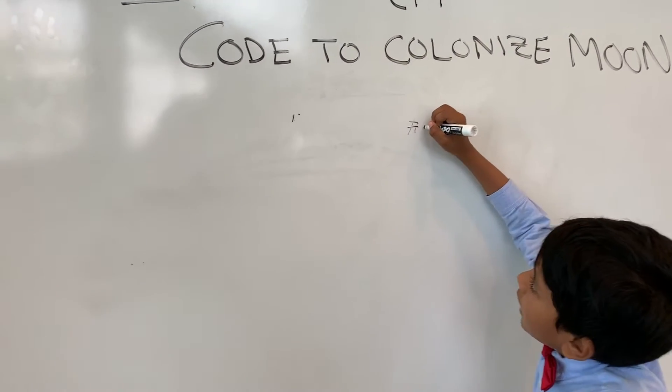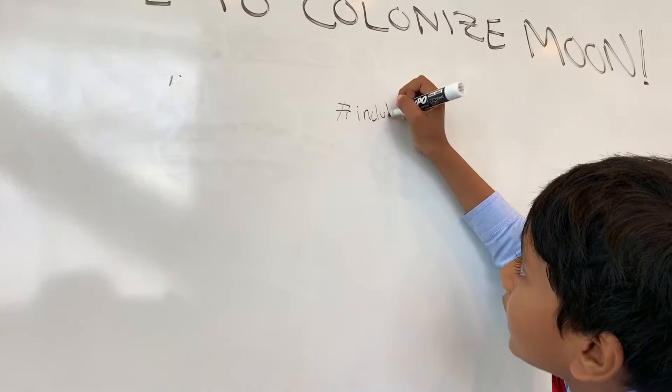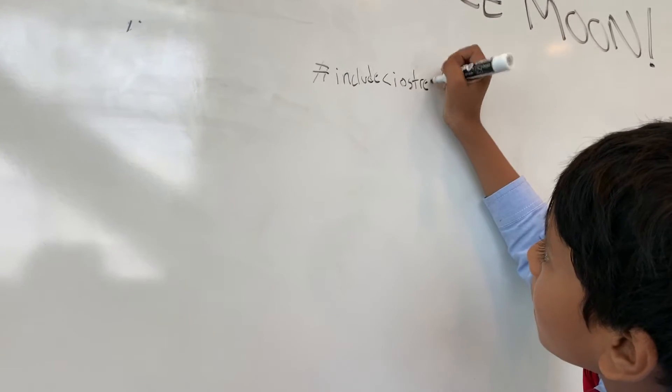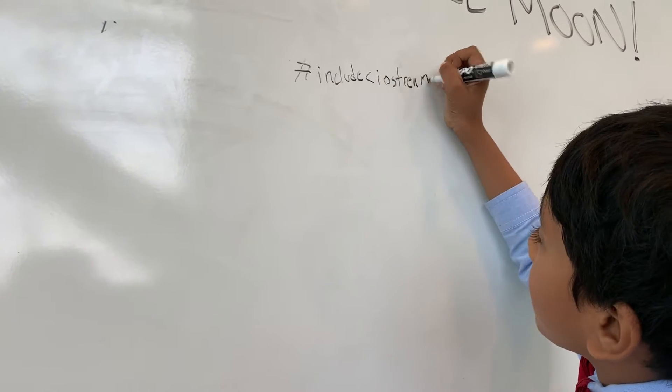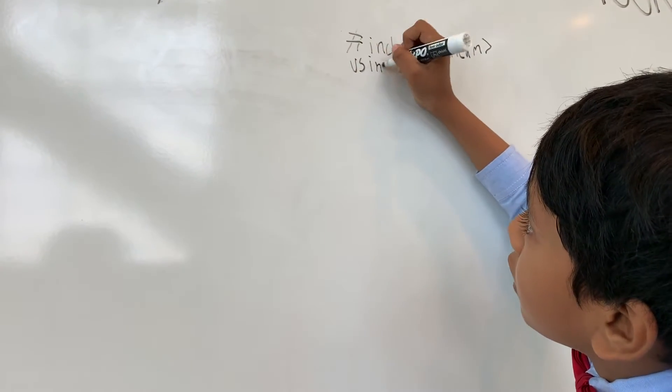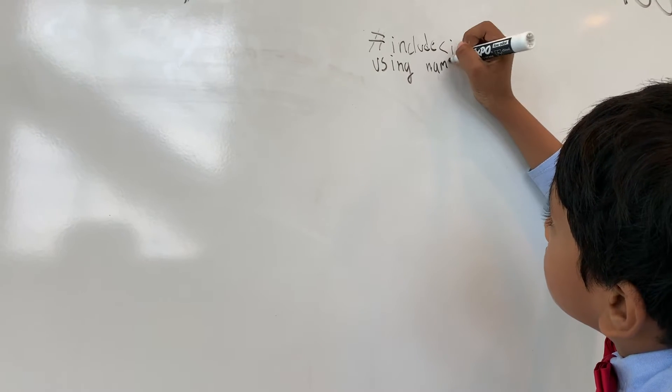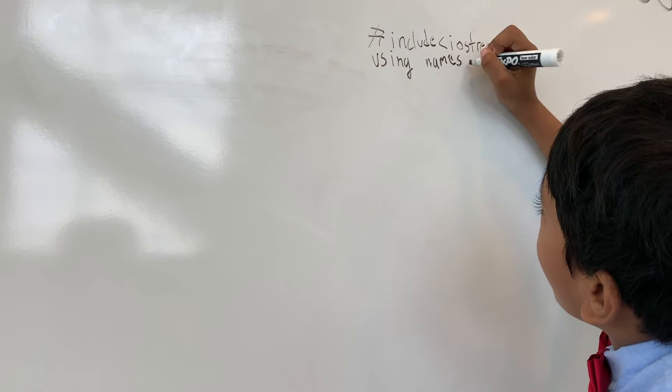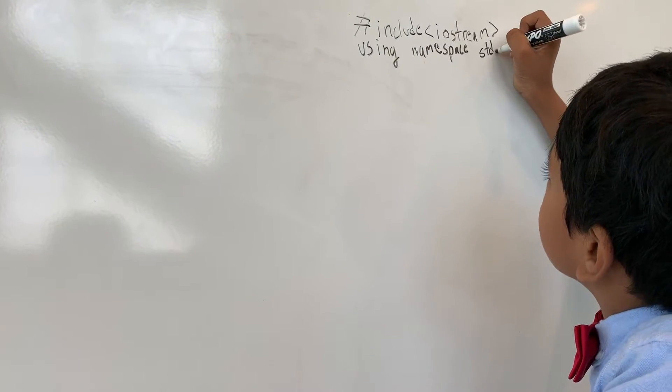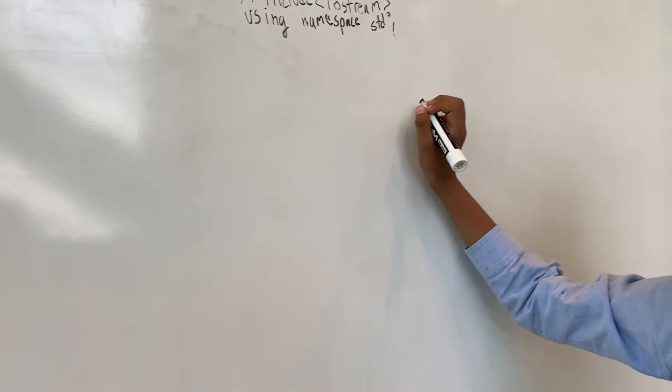So, the first line we absolutely will always need is hashtag include iostream. Then, you need to write this line of code: using namespace std, and don't forget to put a semicolon because it's a command.